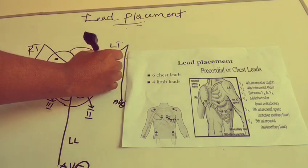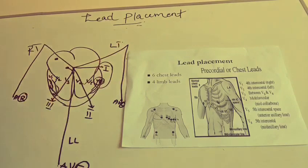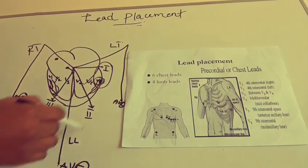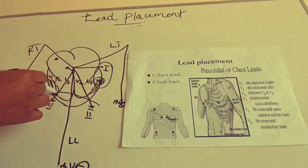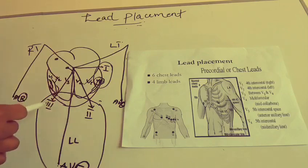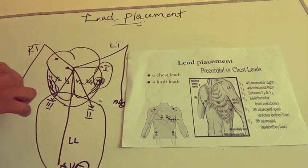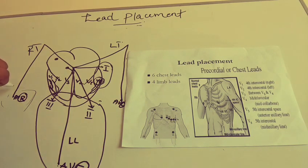Lead I is kind of a neighbor to V6. Leads II, III, and AVF look at the inferior part of the heart — so for an inferior MI, we might see changes in those leads along with AVF. AVR doesn't have that many significant findings in ECG reading, but we will go through AVR in detail in the coming videos. Thank you.